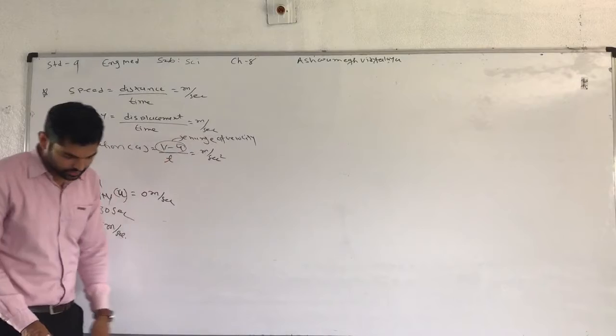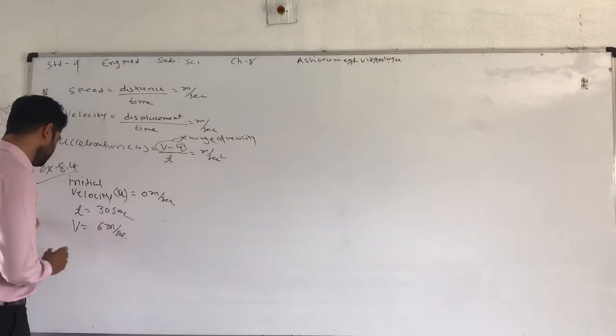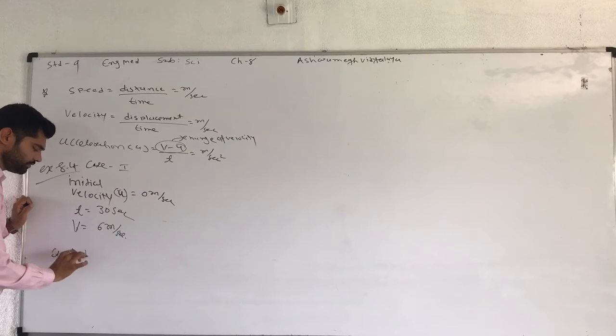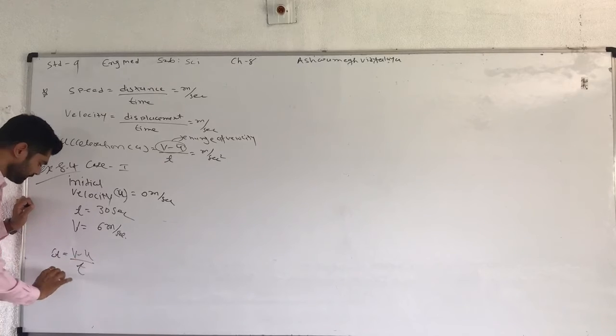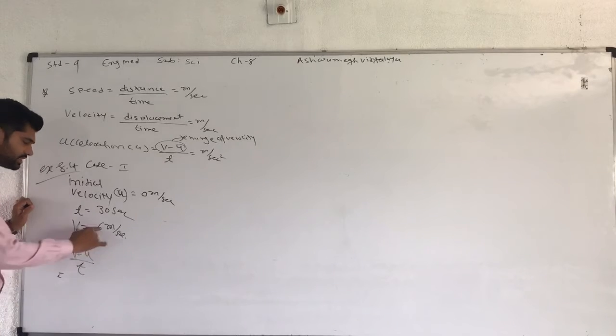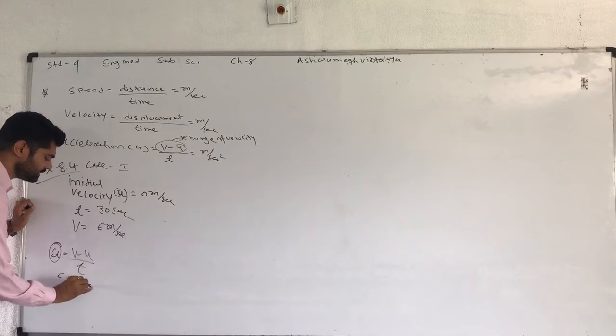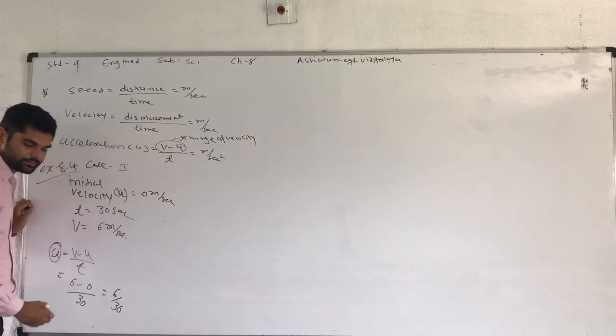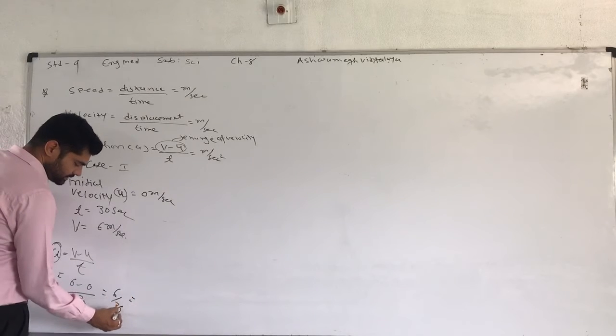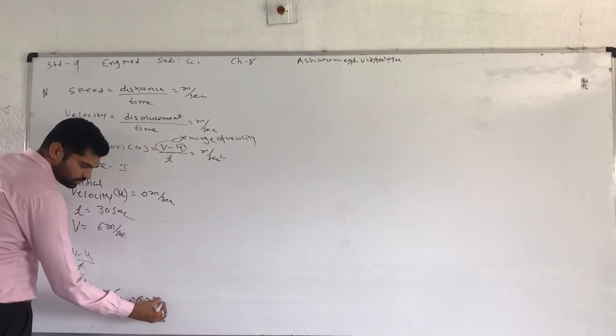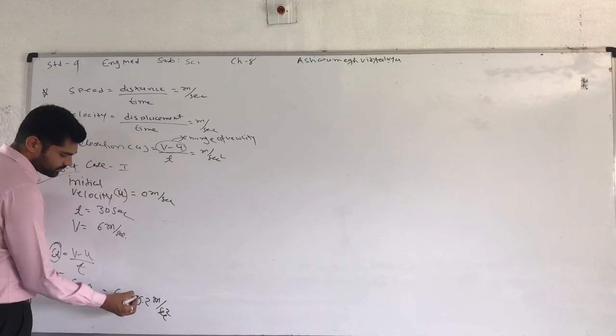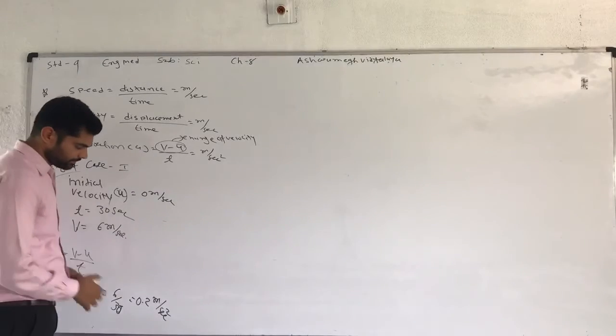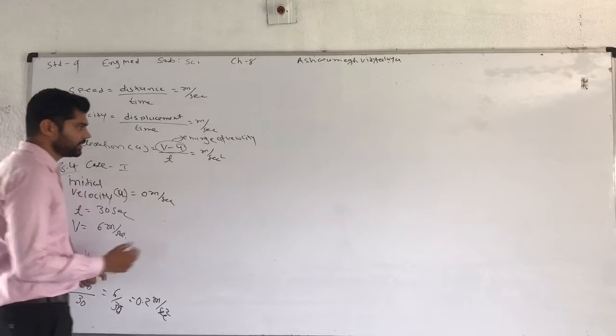Case 1 here, acceleration A is equal to V minus U divided by t. Initial velocity 0. Final velocity is equal to 6. Minus initial velocity is 0, divide by time 30 seconds. So 6 divided by 30, the answer is 0.2 meter per second square. Now case 2.